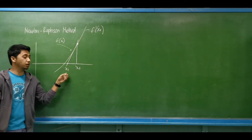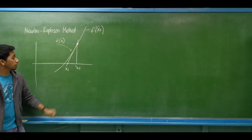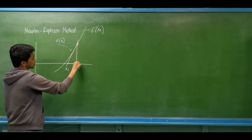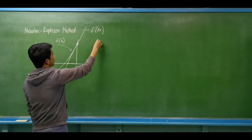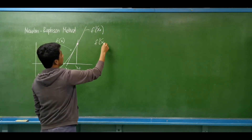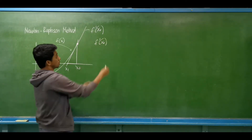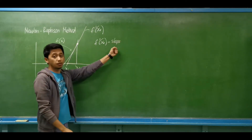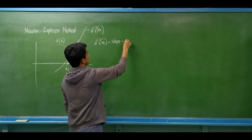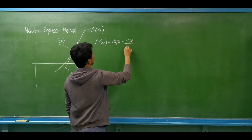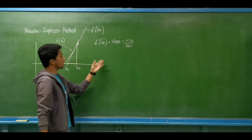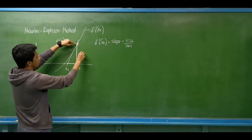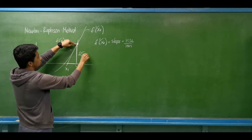How do we compute for this value of x sub 1? By ratio and proportion of similar triangles, we use the slope. Take note that the first derivative of the function at x sub 0 is the same as the slope. If we say slope, it is the same as rise over run. So what is the rise? What is the height of this triangle? That is the same as f of x sub 0.